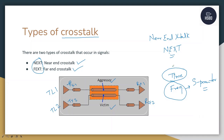The transmitter TX1 is the transmitter for transmission line 1. Whenever there is switching in transmission line 1, whatever crosstalk you see at TX2 will be the near end crosstalk. To rephrase: the crosstalk in TX2 because of TX1 is called near end crosstalk.